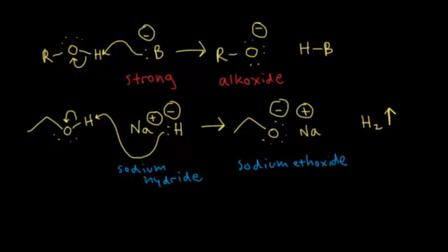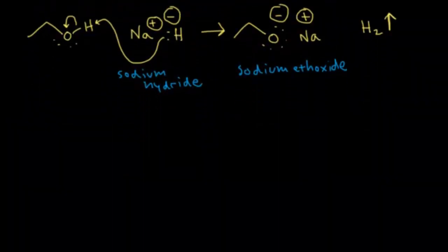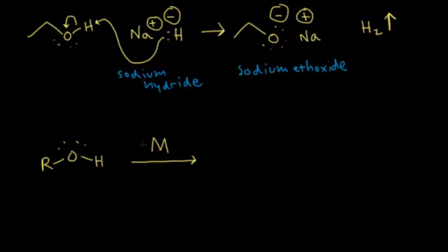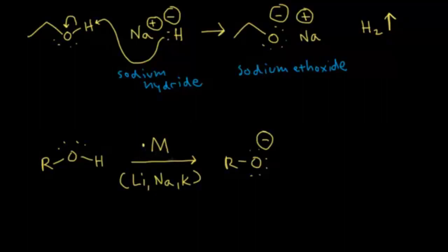There's another way to form alkoxides — reacting an alcohol with a group 1 alkali metal, such as lithium, sodium, or potassium, all of which have one valence electron. The metal donates its one valence electron, leaving it with a plus 1 charge, and the alcohol is converted to an alkoxide with three lone pairs and a negative 1 formal charge. This reaction also releases hydrogen gas.